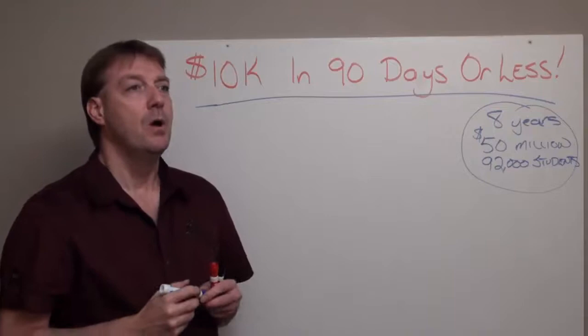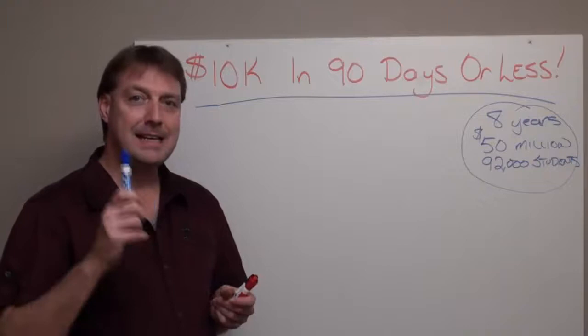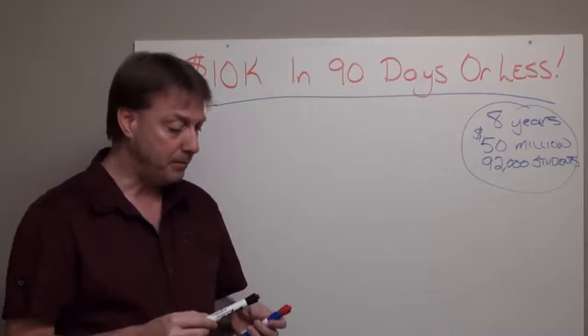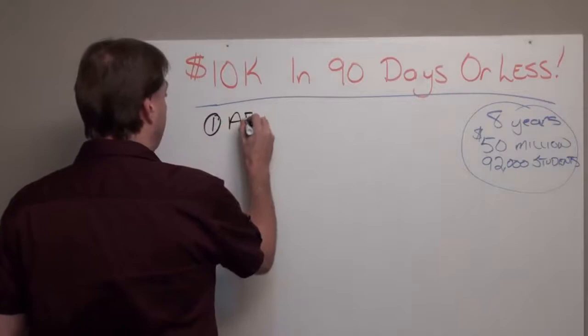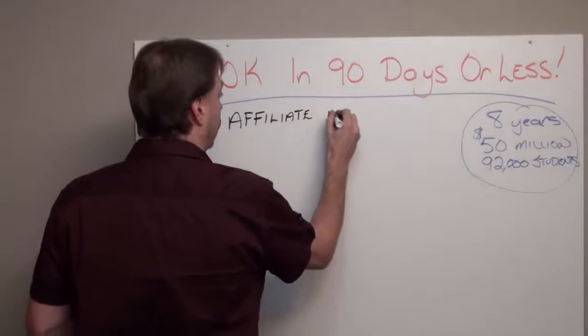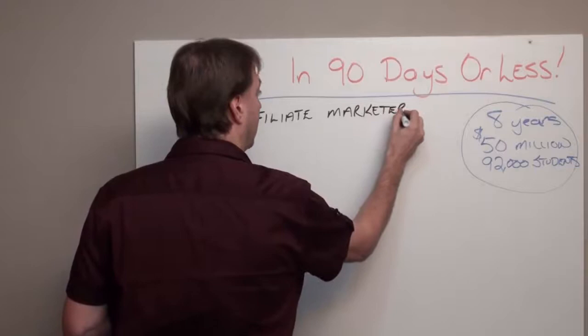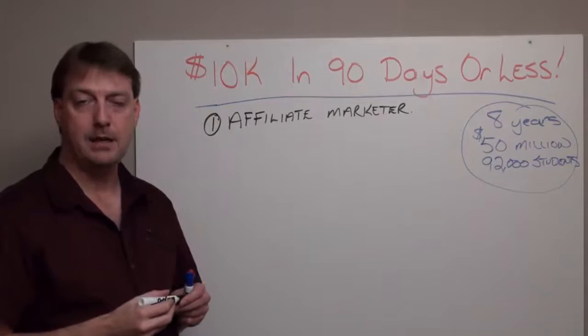That answer is also very simple. There are two ways. The first and foremost way — the easiest way — is to become an affiliate marketer. The very easiest way to start earning an income online is to become an affiliate marketer, to get into affiliate marketing. The second one is to basically become your own product vendor — you would want to have your own product.